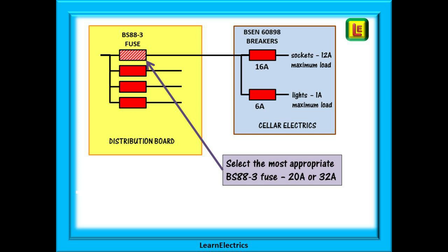The question is what size BS88-3 fuse shown here as a red striped fuse should be fitted in the distribution board to achieve proper selectivity if the cellar sockets develop an earth fault?